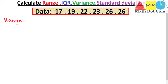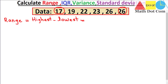We will start with the range. Range basically has the formula of highest value in the given data set minus the lowest value. Here in the given data set, the highest value is 26 and the lowest value is 17, as it is already in ordered manner. If your data set is not in ordered manner, you have to arrange it in ascending or descending order. So we put these values in the formula: 26 minus 17 equals 9. This is the value of the range.